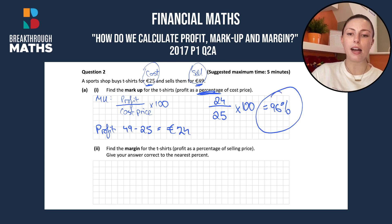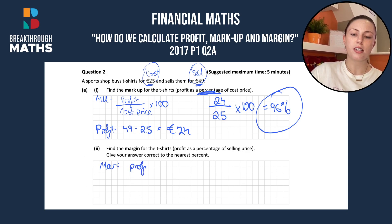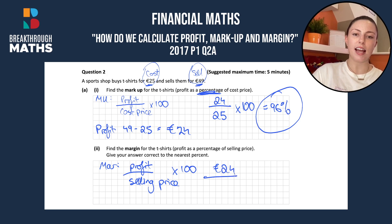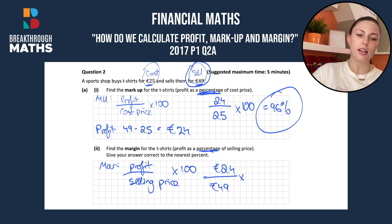On to the second part: we have to find the margin for the t-shirts. The margin is profit over selling price as a percentage, so again we multiply by 100. Our profit stays the same at €24, and our selling price is €49.